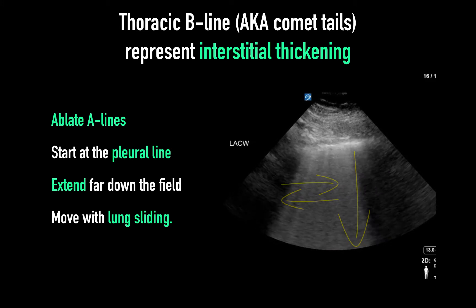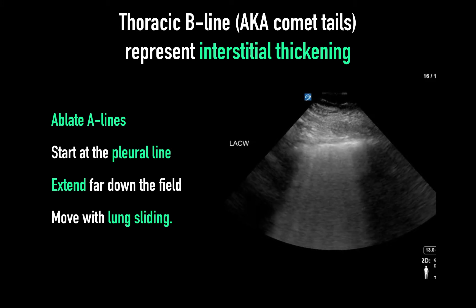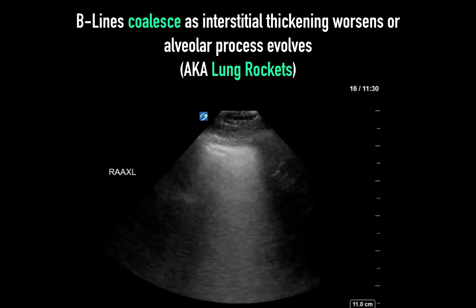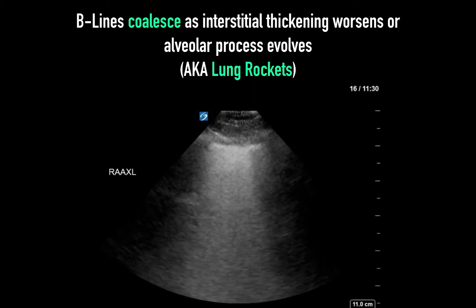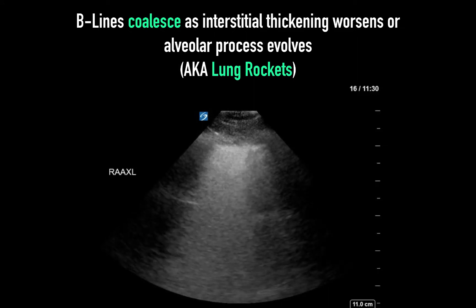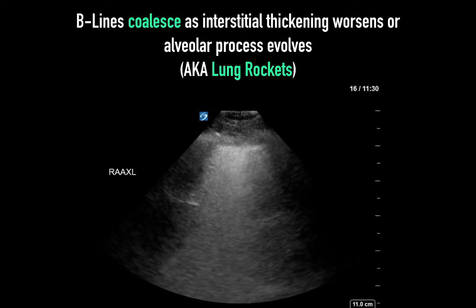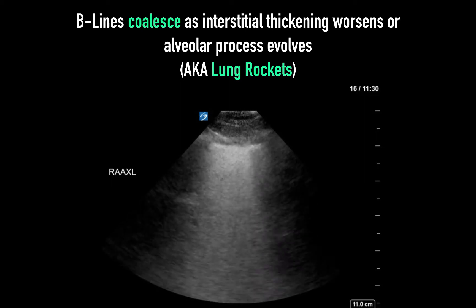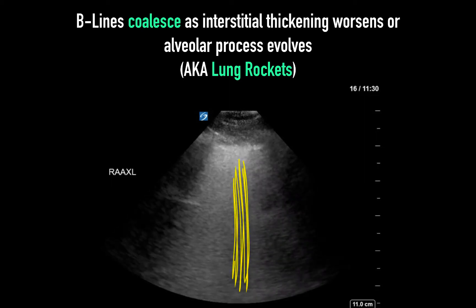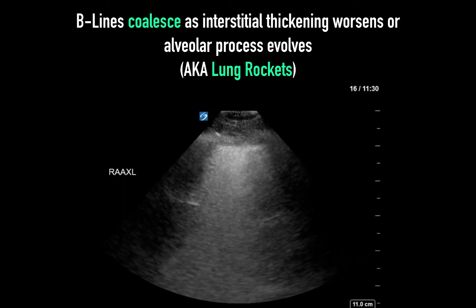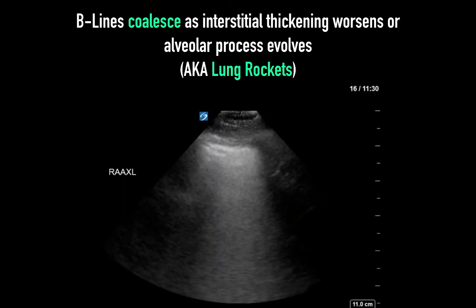As discussed, B-lines also mean that there cannot be a pneumothorax at that interface. As interstitial thickening worsens, or some alveolar fluid accumulation occurs, the B-lines coalesce into thicker bands as seen above. This is sometimes referred to as lung rockets.